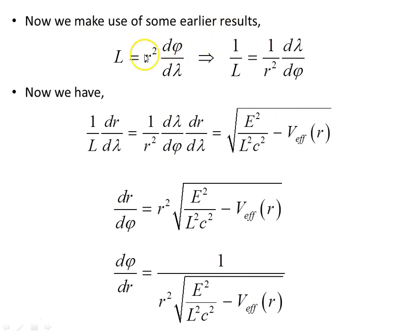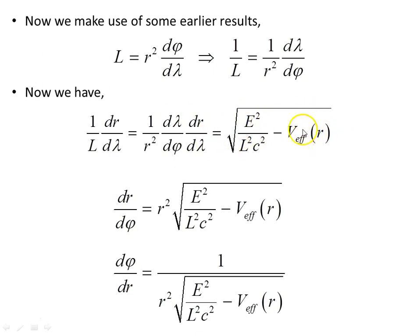From earlier results using the Killing vectors, the angular momentum is a conserved quantity in the Schwarzschild geometry. Taking the reciprocal gives 1/L · dR/dλ. The affine parameter λ allows dR/dλ to be broken into dλ/dφ · dR/dλ, where dλ/dφ comes from the angular momentum expression. The dλ terms cancel, leaving dR/dφ. Multiplying across by r² gives us our equation, and taking the reciprocal gives dφ/dR, which we will use going forward.